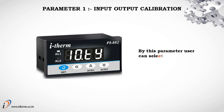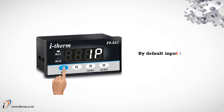Parameter 1: Input/Output Calibration. By this parameter the user can select either input or output for user calibration. By default, input is selected for user calibration.